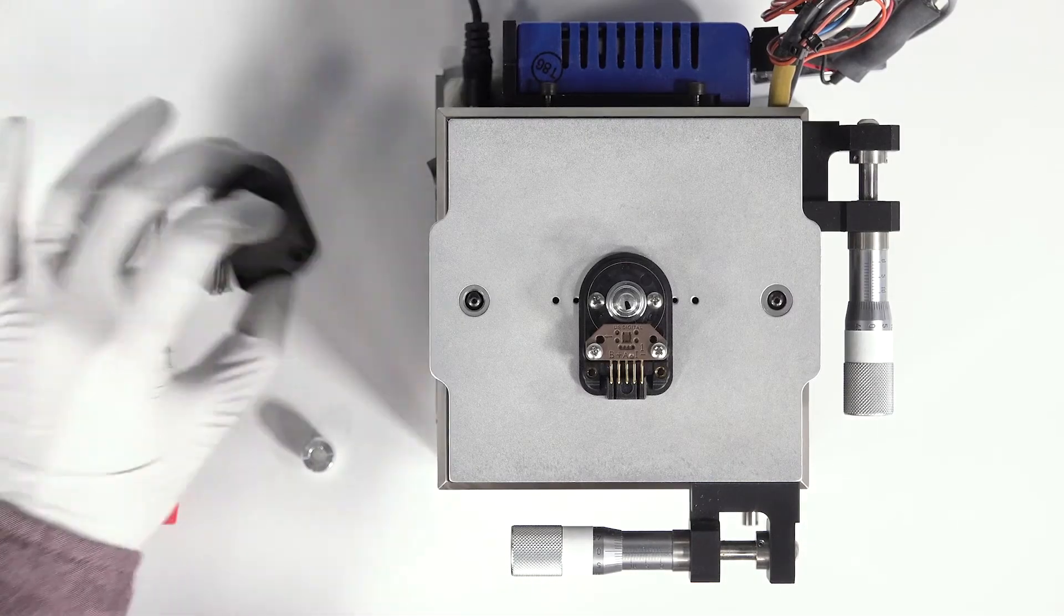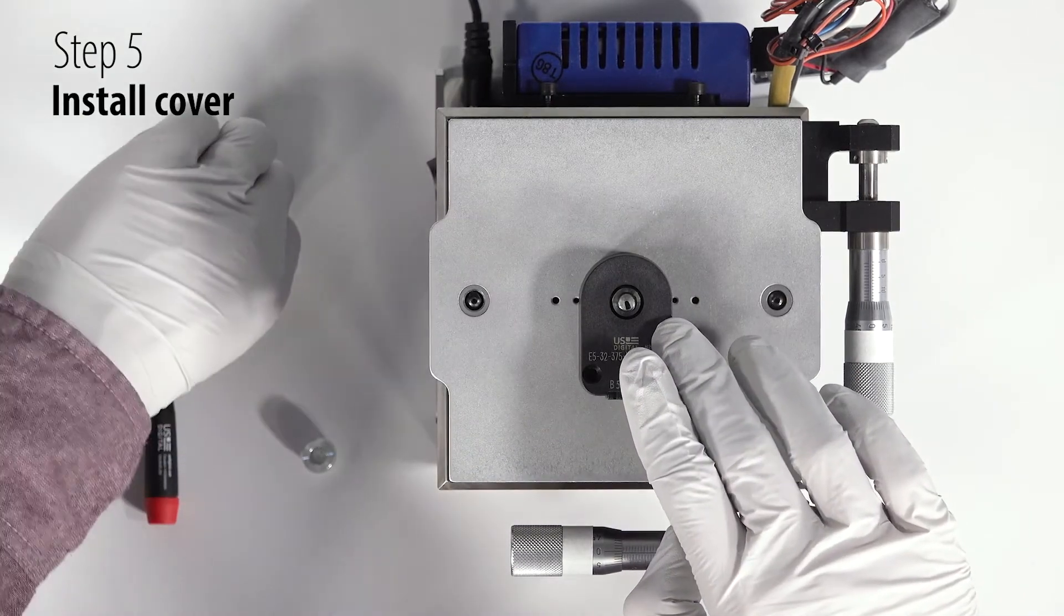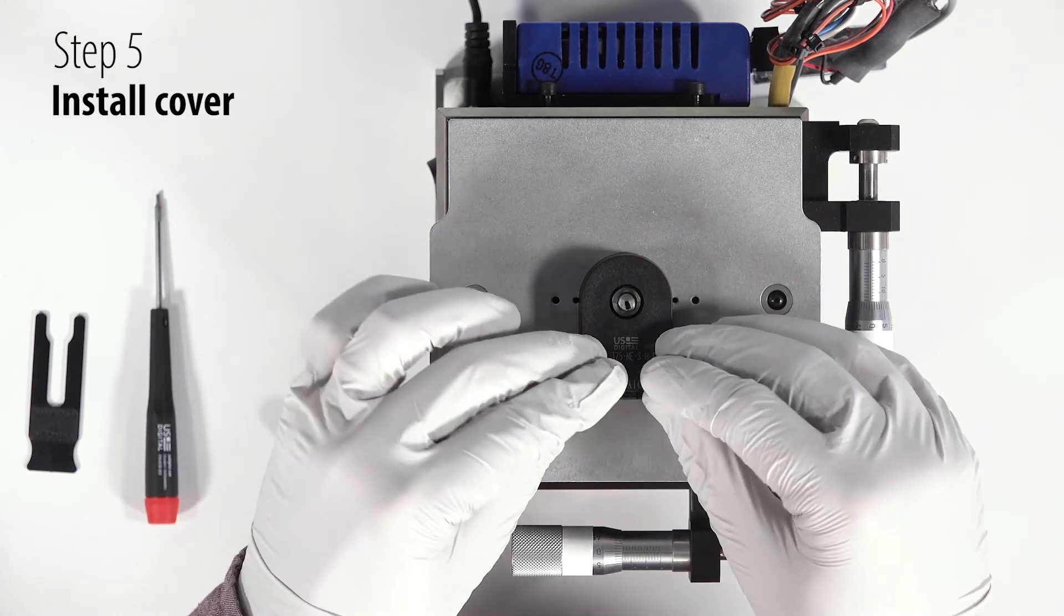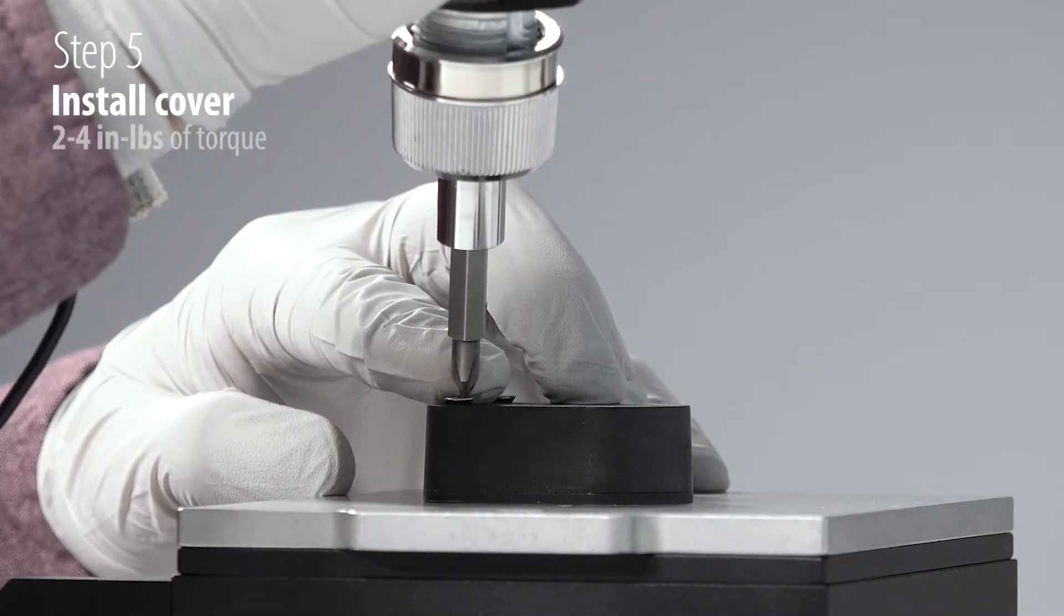The final step is to install the encoder cover with the two flat head screws. And these are tightened to two to four inch pounds.